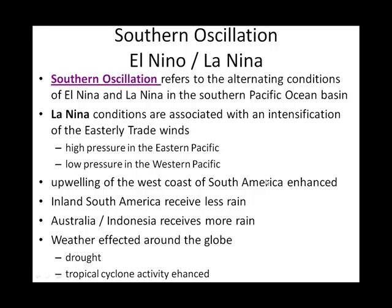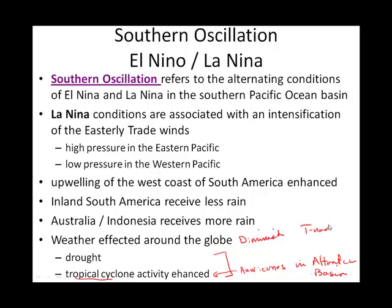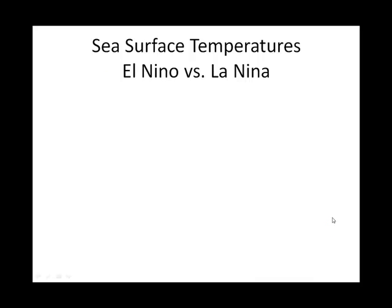La Niña can definitely have an effect throughout the world as well, bringing drought and rain to various locations. Looking at tropical cyclone or hurricane activity, a La Niña enhances hurricanes in the Atlantic, which are our most noteworthy North Atlantic Ocean Basin hurricanes. The presence of a La Niña event will diminish tornadoes. It's just one factor overall.